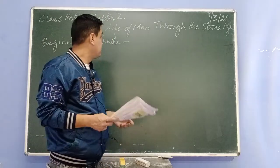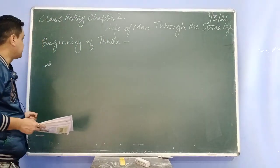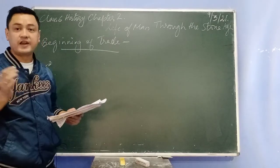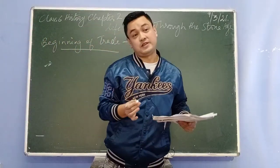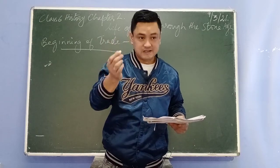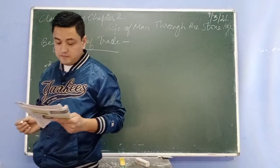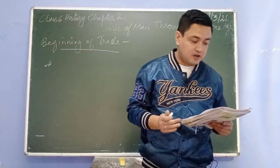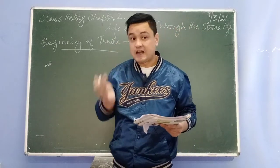Good morning children. This video is on the life of man through the Stone Age, Chapter 2 for Classic History. Today the topic I'm going to discuss is the beginning of trade. Trade, as you know, is the buying and selling of things — it means business. How did business start? That is the main point we are going to understand in the Neolithic age.